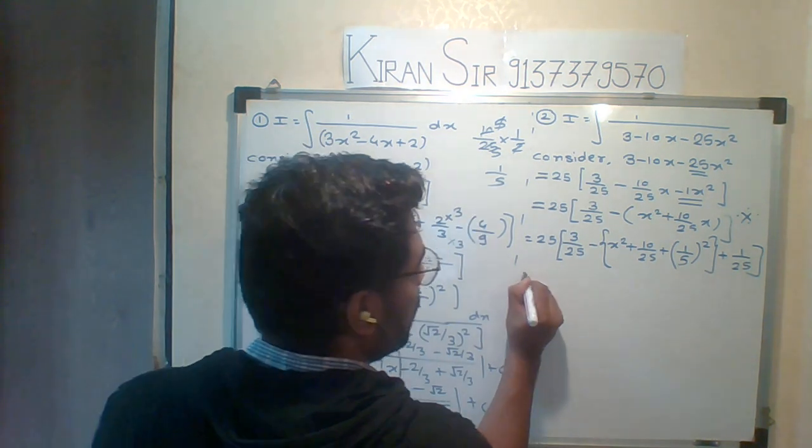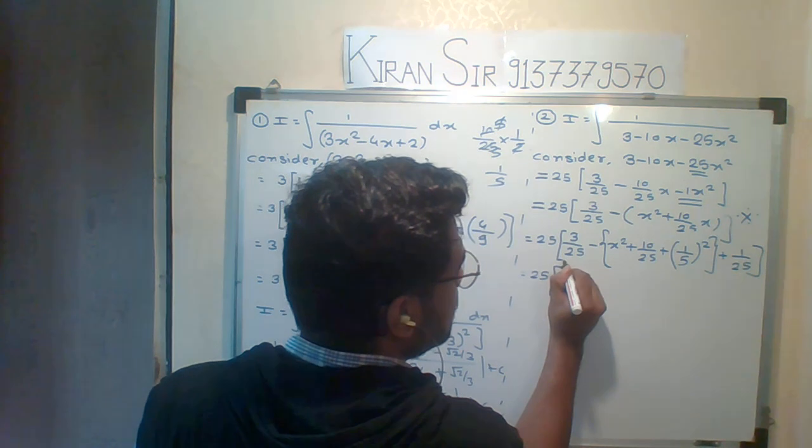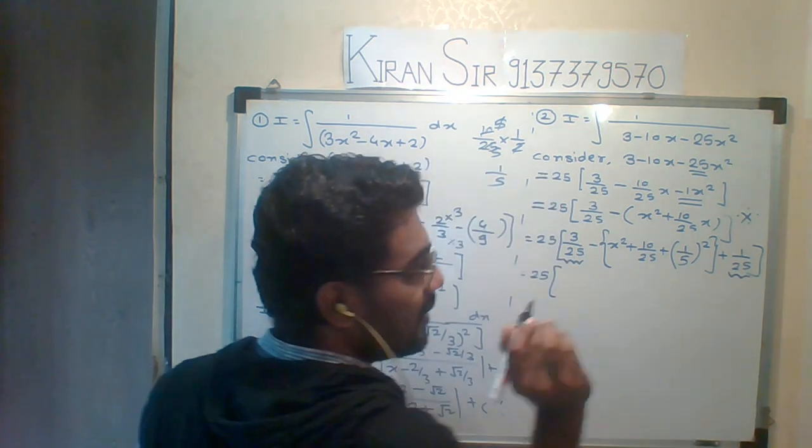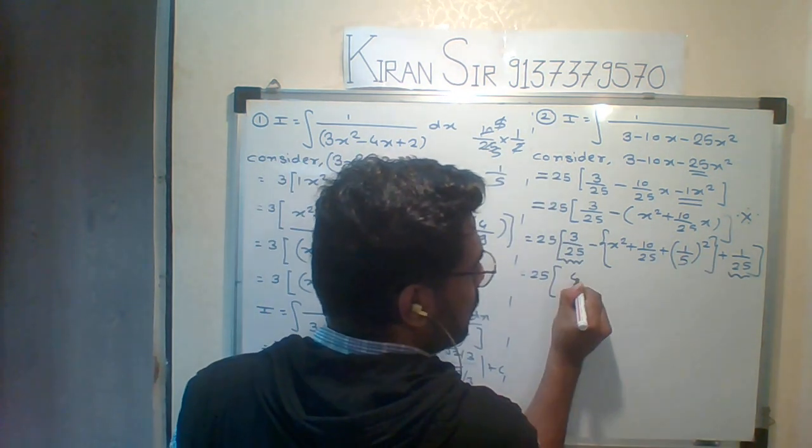Now I have a very easy question. Because the numbers 3 by 25, 1 by 25, the denominator is equal. So 3 plus 1 is 4, 4 by 25.